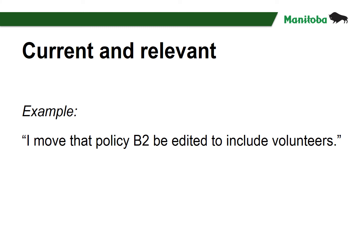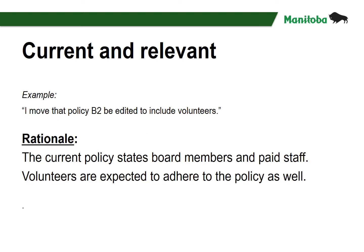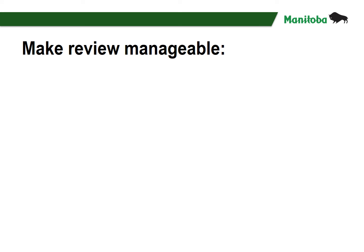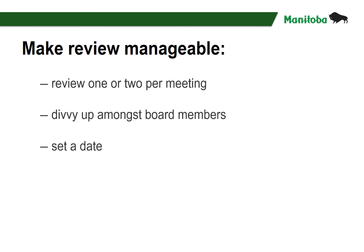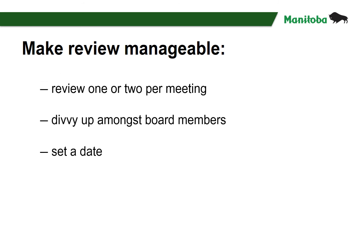Let us look at one suggested revision: 'I move that policy B2 be edited to include volunteers.' The rationale is that the current policy states board members and paid staff, but volunteers are expected to adhere to the policy as well. Consider what risk you and fellow board members may face should a volunteer not act in accordance with the board's desires. The motion would require a seconder, discussion, and a vote. I firmly believe you should make reviews manageable — review one or two policies per meeting, divvy them up amongst board members, or set a scheduled date to address the review.